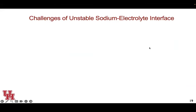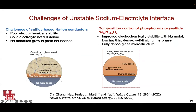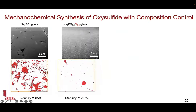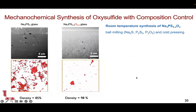With about two minutes remaining, I'll quickly talk about the anode-side challenges: anode-solid electrolyte reactivity, and sodium growth into dendrites along grain boundaries. In a Nature Communications paper, we found that with very fine chemical composition control, we can enable an oxysulfide-based solid electrolyte that improves electrochemical stability with sodium metal. They form a very thin, dense, and self-limiting interface. The solid electrolyte itself is a fully dense glass microstructure — a 3D reconstruction shows it is almost 98% dense compared to 85% dense with oxygen-containing composition.